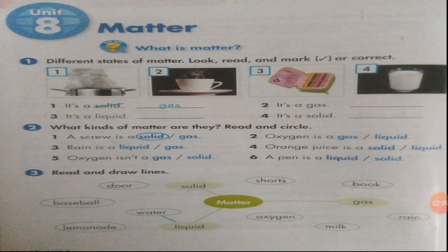Question number two: what kinds of matter are they? Read and circle. Six statements are given, and in each statement there are two options. You have to circle the correct option. One is already done — a screw is a solid or gas? Solid is the correct answer, so solid is circled.